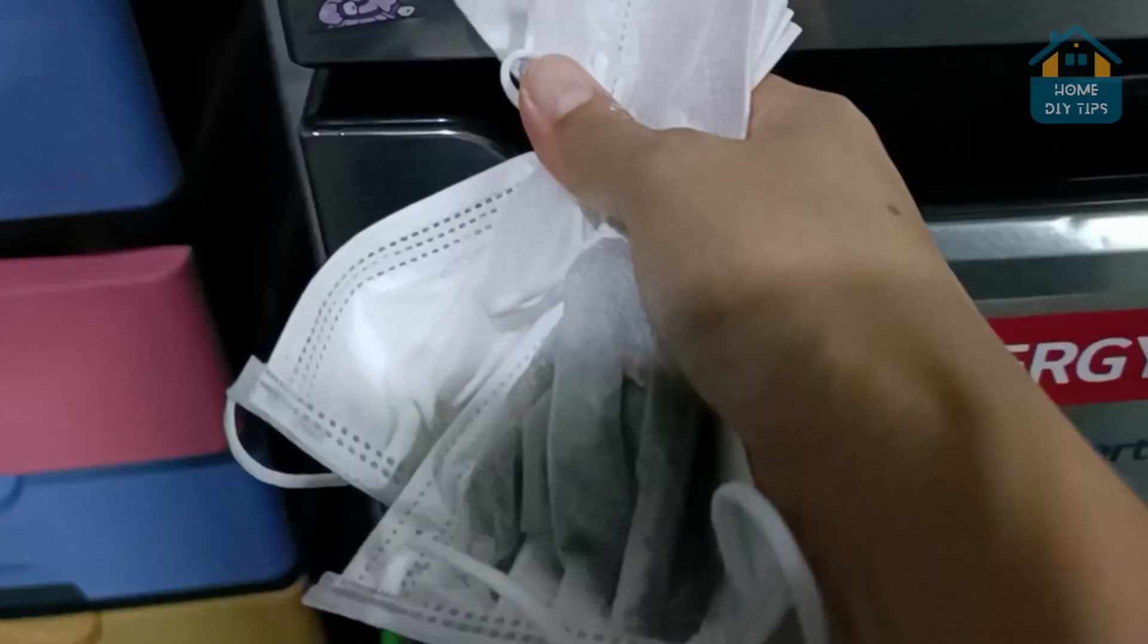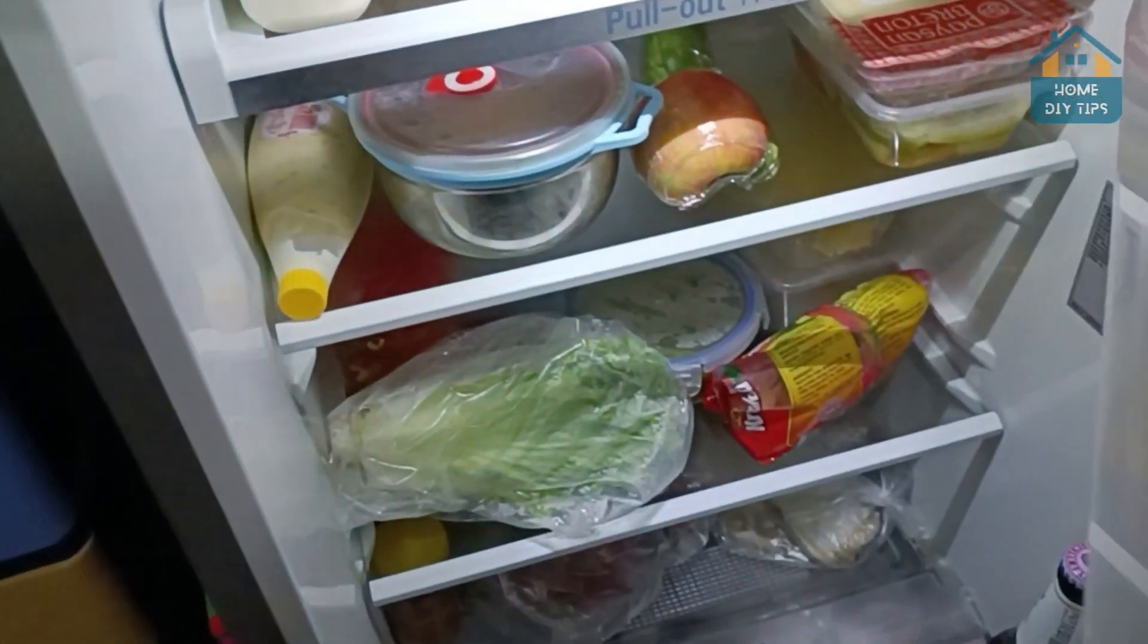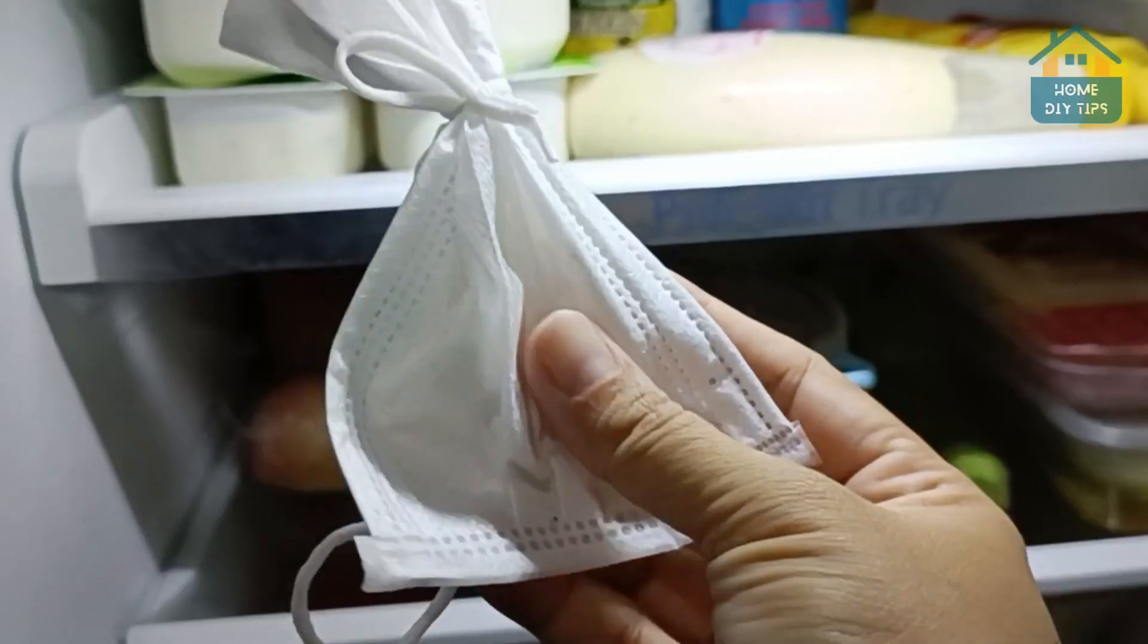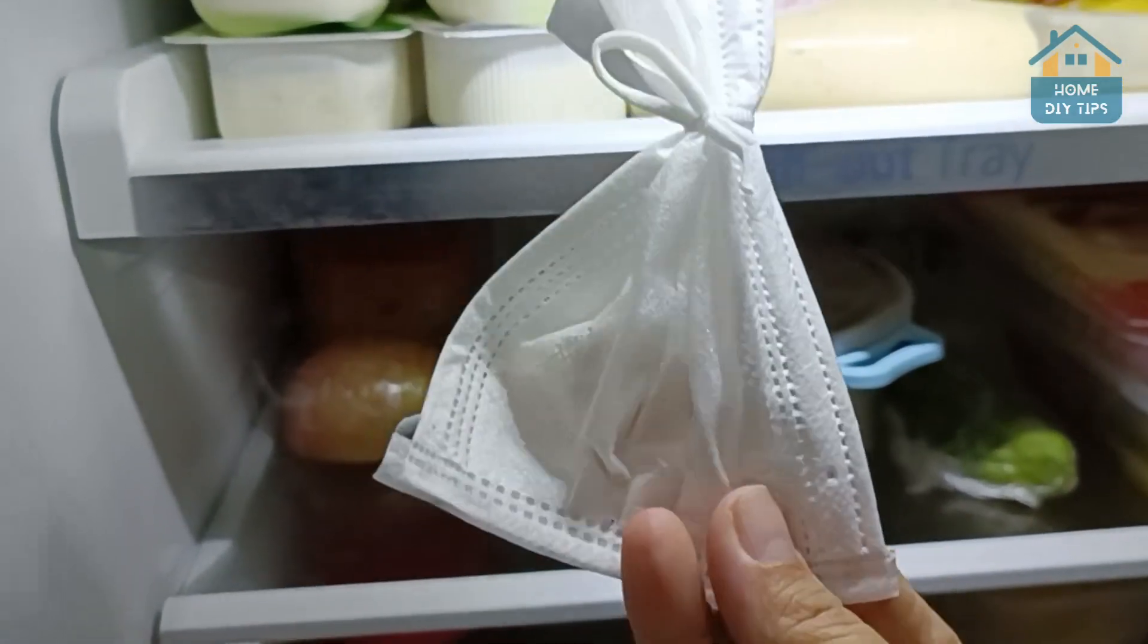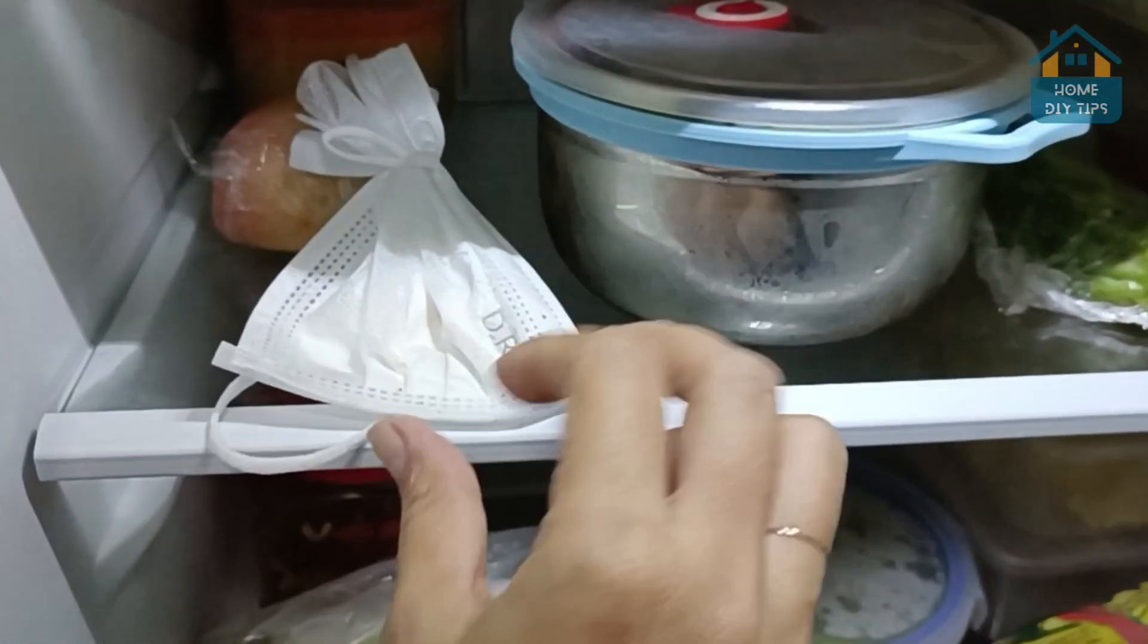But what's the secret? The white powder is none other than baking soda, and you can find it in your kitchen. The brown powder is just regular coffee powder.